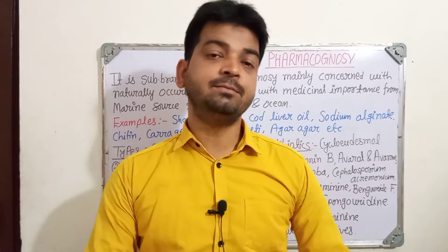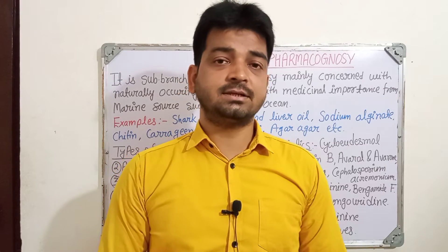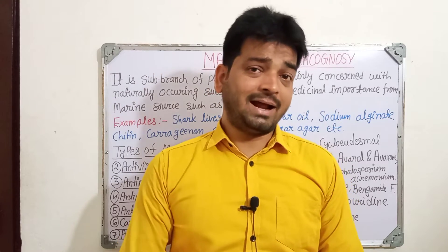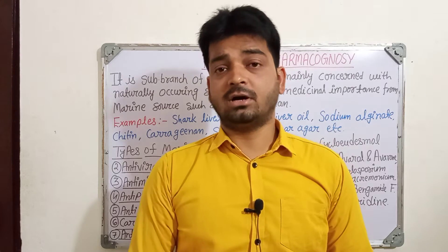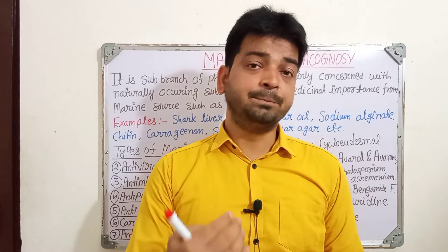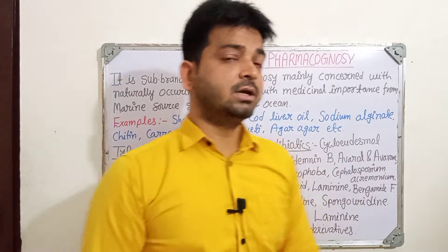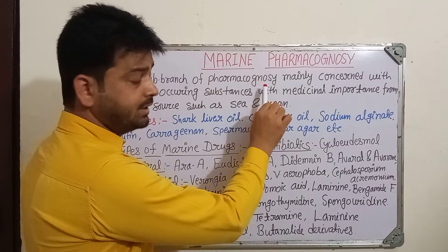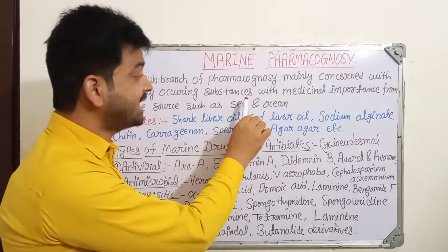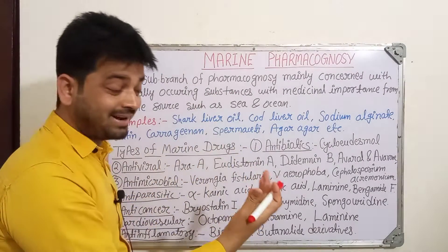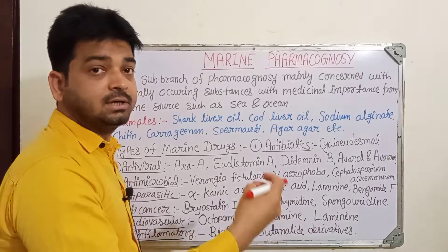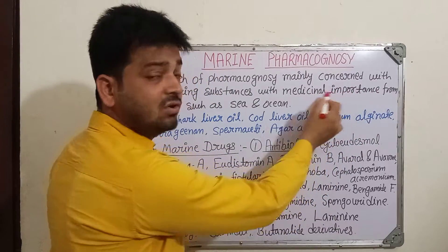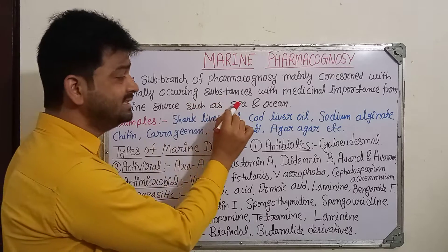Hello students, now we are going to discuss about marine pharmacognosy, or marine drugs. These are drugs obtained from the sea or ocean. Whatever sea plants and animals are there - algae or some kinds of fungus - when we try to get medicinally important chemical compounds from them, those are called marine drugs. Marine pharmacognosy is the sub-branch of pharmacognosy mainly concerned with naturally occurring substances with medicinal importance from marine sources such as sea and ocean.